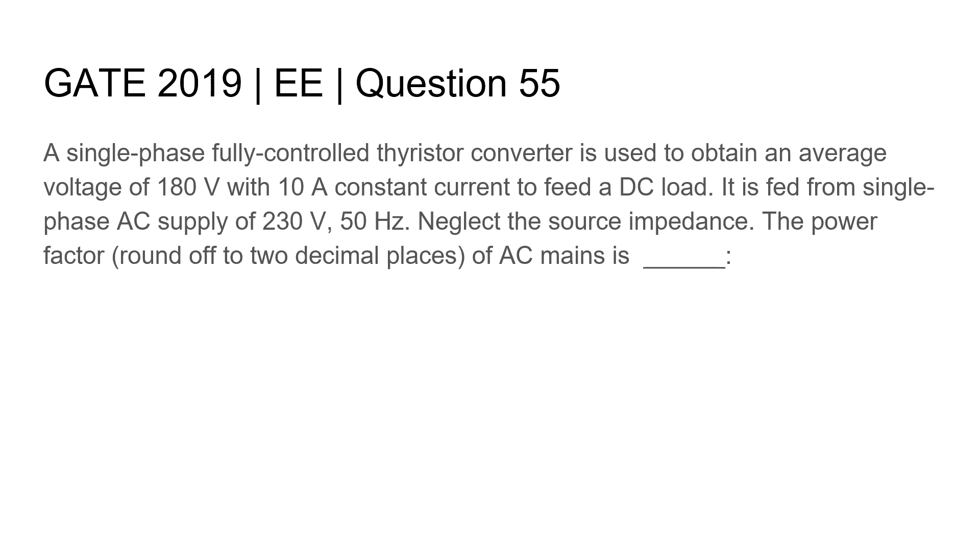A single-phase fully controlled thyristor converter is used to obtain an average voltage of 180V with 10A constant current to feed a DC load. It is fed from a single-phase AC supply of 230V 50 Hz. Neglect the source impedance. The power factor of the AC mains is.